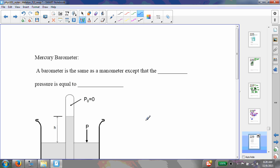Let's also look at a barometer, a mercury barometer in particular. It's the same as a manometer except that the standard pressure is equal to zero. The standard pressure, now that's going to be P naught, and that's going to equal zero. So you'll have a vacuum here.